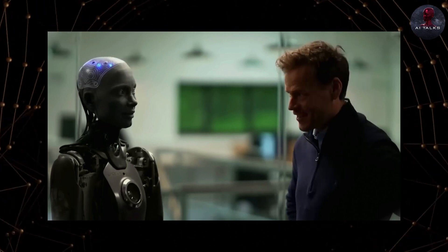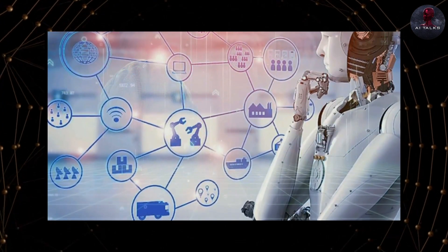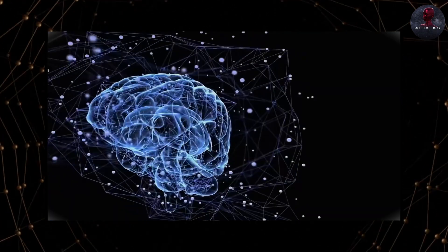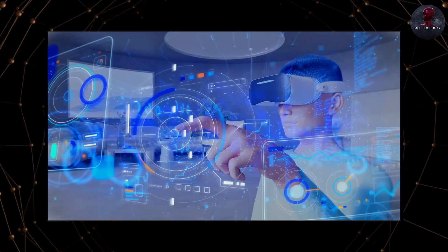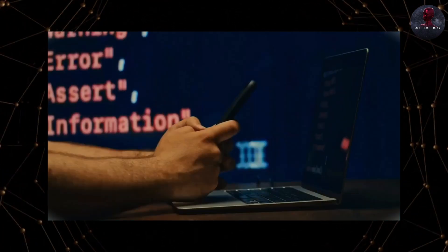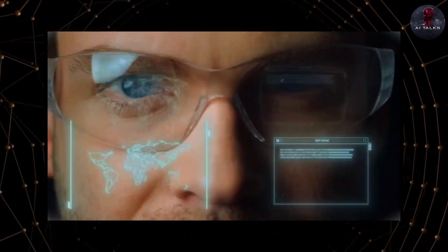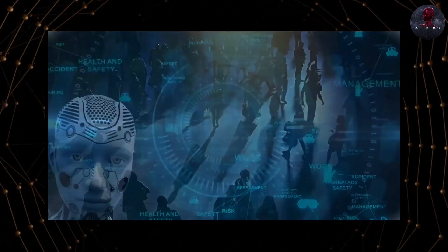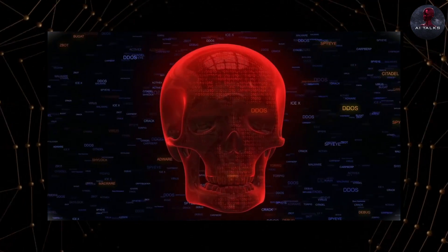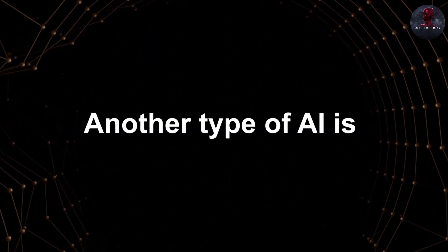ASI can access vast amounts of information from diverse sources, making informed decisions and solving complex problems. Additionally, ASI could enhance its intelligence autonomously, leading to exponential intellectual capacity growth. AI is also a threat to humans. Ensuring that ASI aligns with human values and ethical principles is a critical concern, as superintelligent systems could make decisions with far-reaching consequences. The development of ASI raises concerns about existential risks, such as the potential for the AI system to take actions that could be harmful to humanity unintentionally.